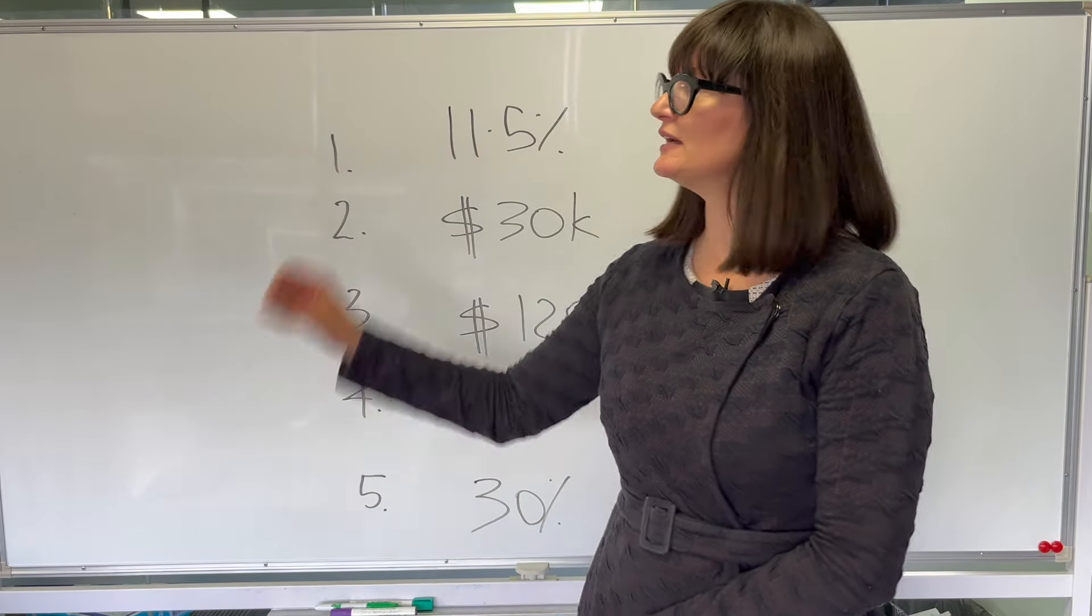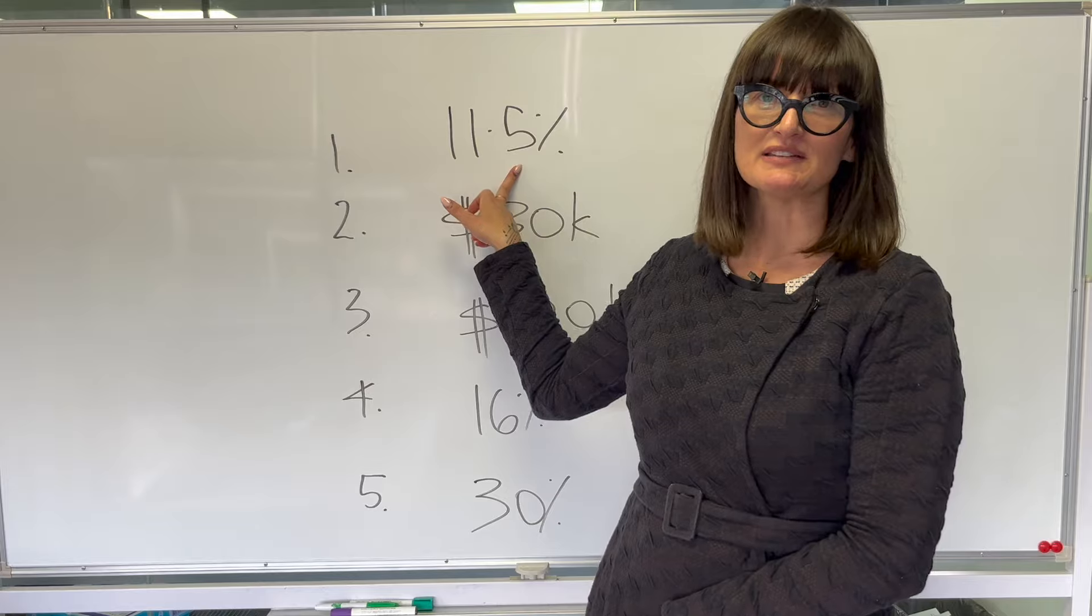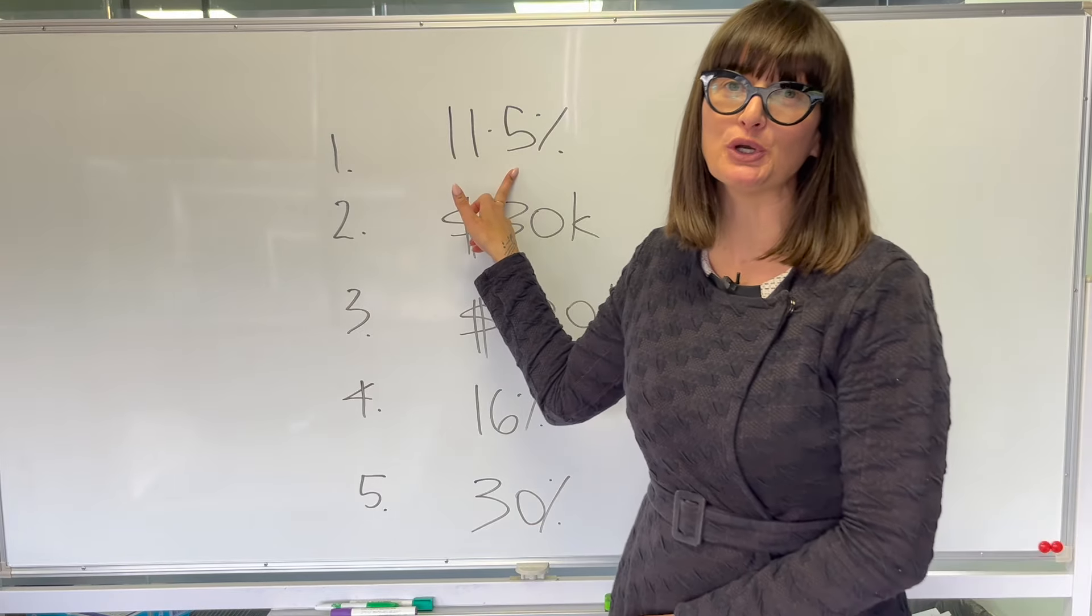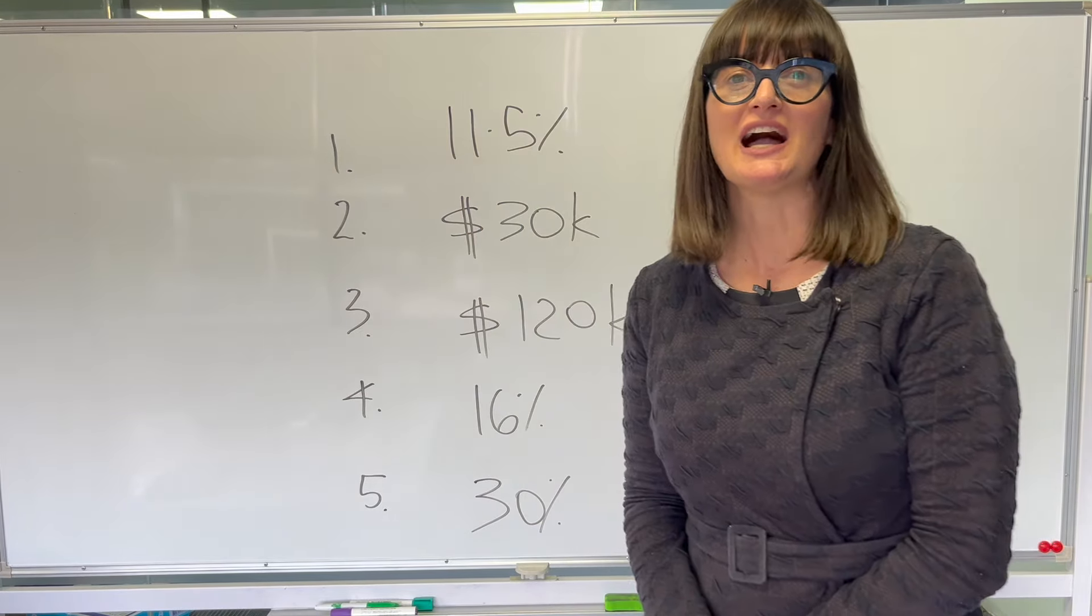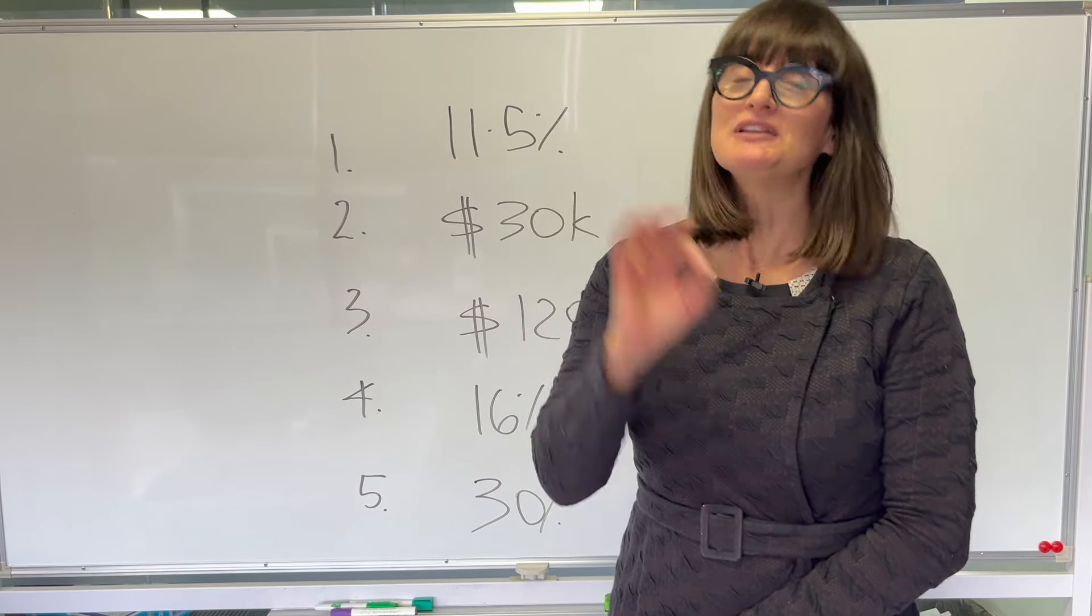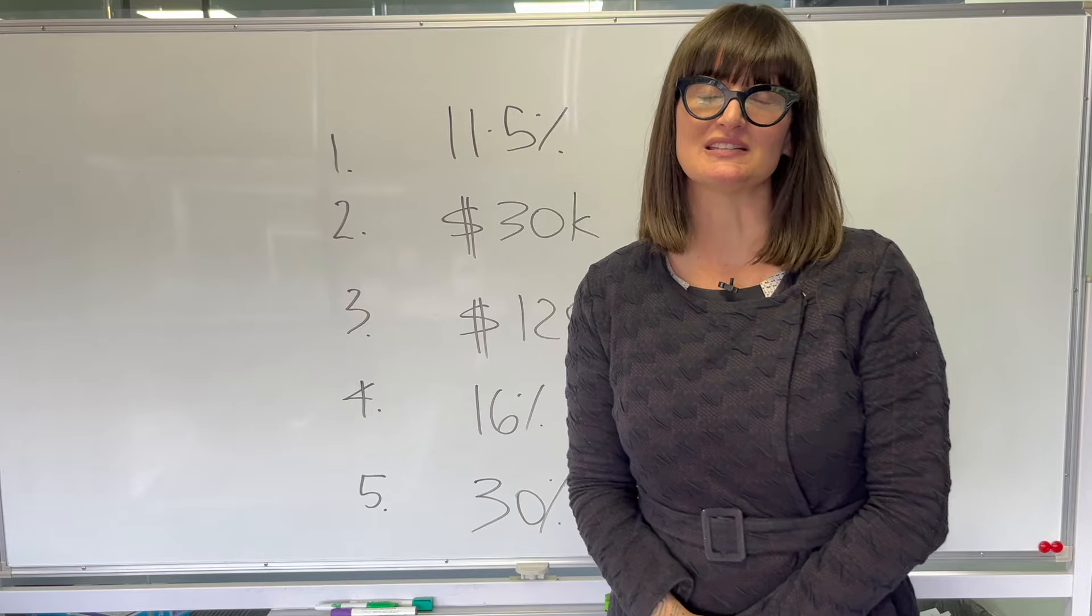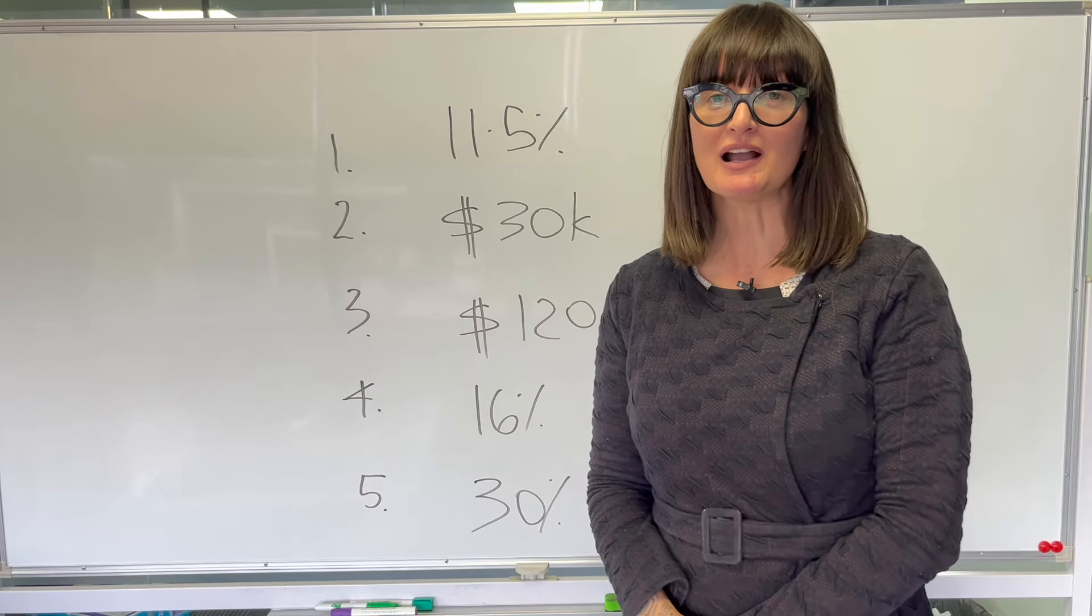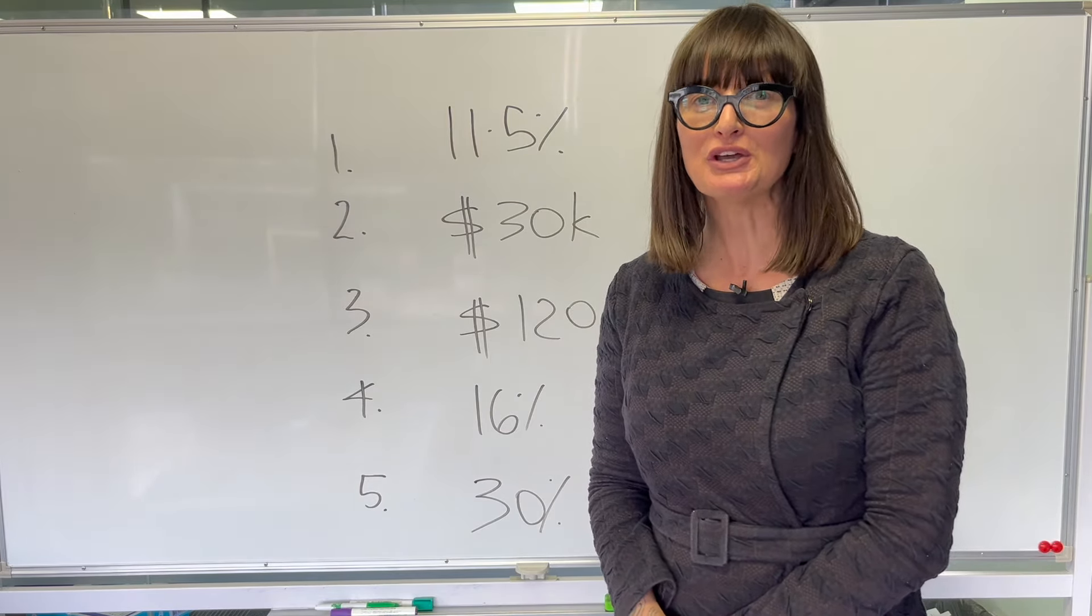So number one is 11.5%. Super guarantee, your employer super contributions, were currently set at 11% of your base. They are now 11.5%, so you're getting a little bit more bang for your buck. Thank you employer, thank you boss.